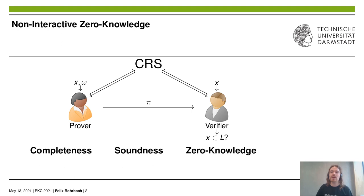Finally, Zero-Knowledge means that the verifier should not be able to learn anything besides whether x is in the language L or not. This is modeled by the existence of a simulator without access to the witness omega, which should create a protocol message indistinguishable from the one by the prover. Soundness can be against a bounded or unbounded malicious prover, and for Zero-Knowledge, the indistinguishability can be computational, statistical, or even perfect.